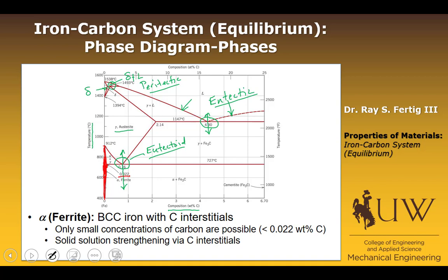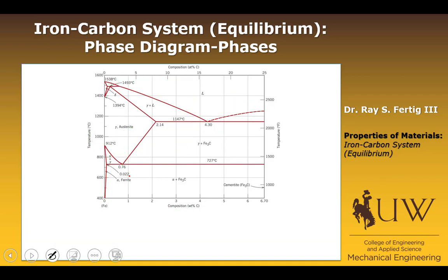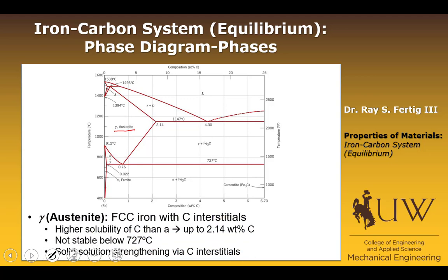Alpha ferrite is one of the important phases you need to be aware of. The next phase is the gamma phase. What's unique about the gamma phase is that it also has carbon interstitials, but it's FCC iron, not BCC. Unlike the 0.022 solubility for alpha, the solubility of carbon in austenite is up to 2.14 weight percent carbon — that's the max solubility.